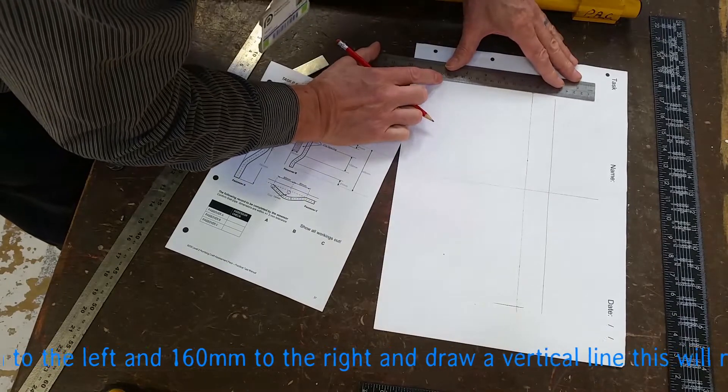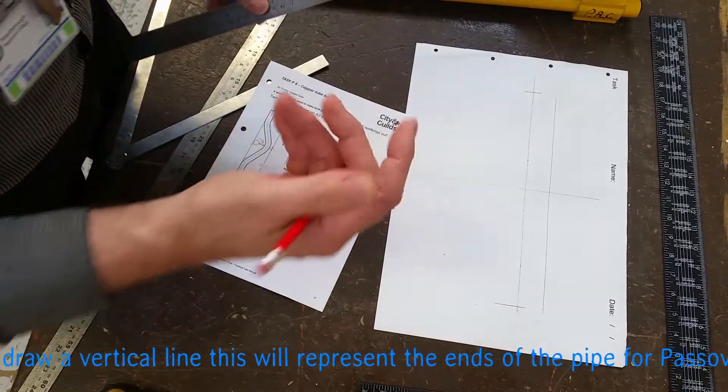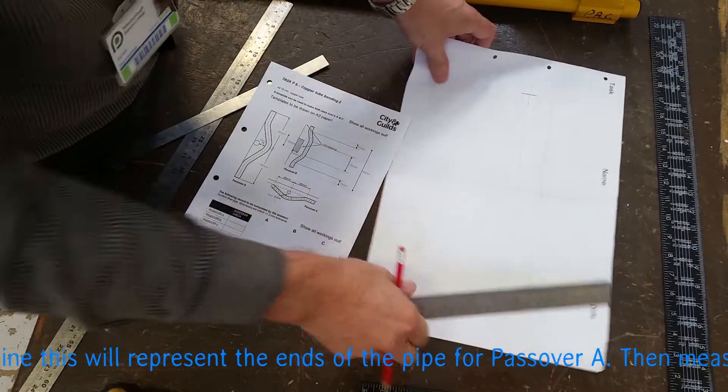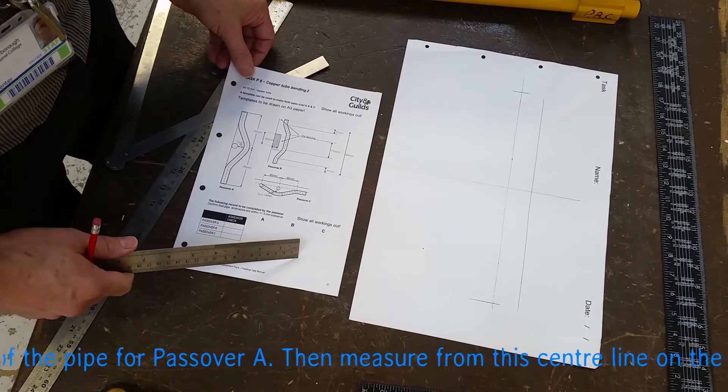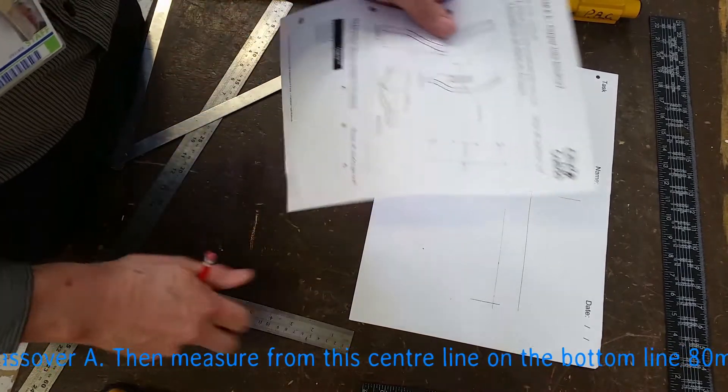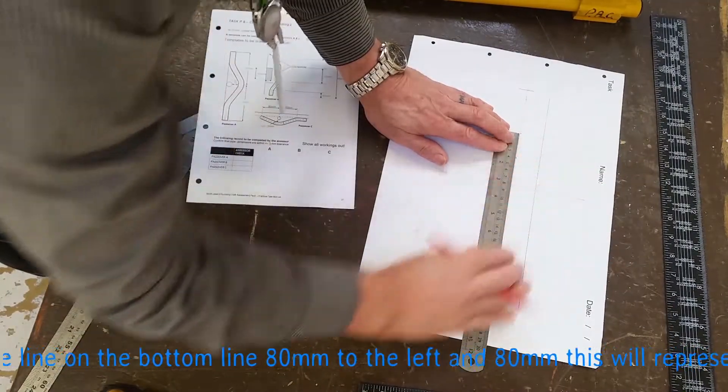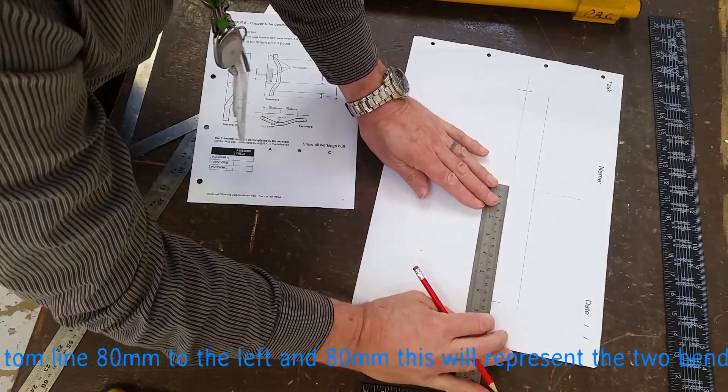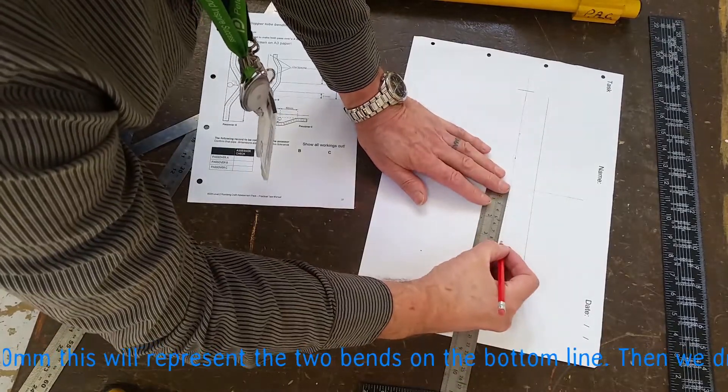This helps to see if your pipe is accurate to the drawing, because later on we're going to lay the pipe with bending on there. So the next two measurements we need are for the second two bends on the bottom pipe, which are 80-80. So we measure from the center line on the bottom line, 80-80, and then draw the line through, so it goes through our top bend, joining up our bottom bends to our top bend.